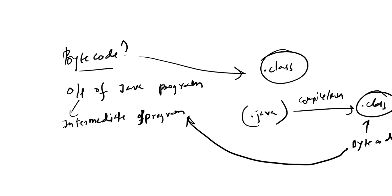This intermediate output which is the bytecode is very highly optimized code, and this is then executed by the JVM and it is converted into the machine code which is actually executed on the particular platform, whether it be Mac, Linux, or Windows.